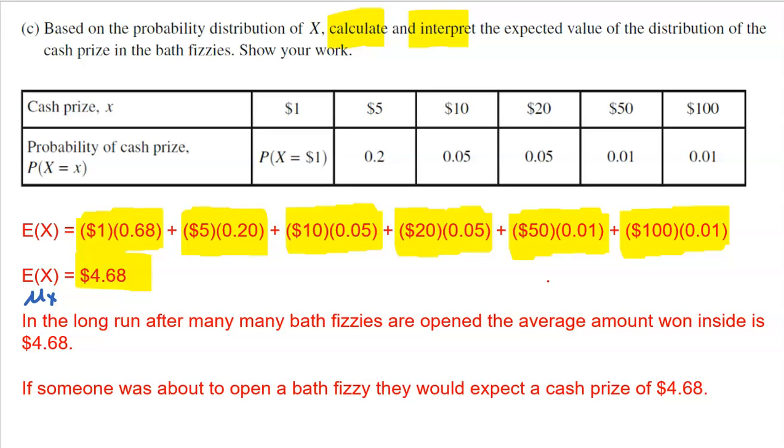We'd probably see a lot of ones in that bath journal, occasional five here and there, maybe a 10 or 20 will pop up and very, very rarely you would not have nearly as many 50s and 100s. But if you did that for many, many bath fizzies in the long run, the average amount of money that you would win from your bath fizzies would be $4.68. Again, another way of looking at this is if someone was about to open up a bath fizzy and you say, okay, I expect you to win $4.68. Now of course that's not even an option for how much you could win, but it's an average in the long run. So make sure that you interpret that value as well.